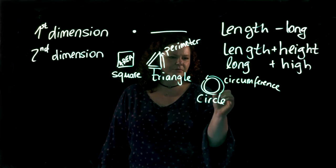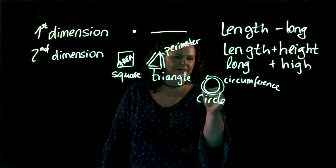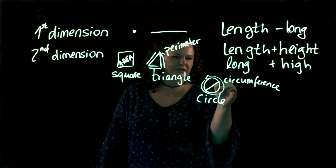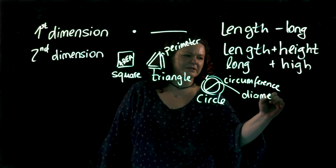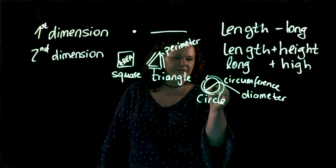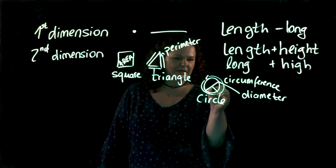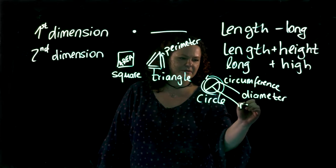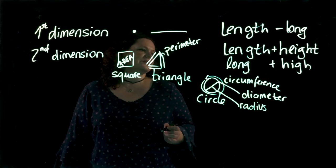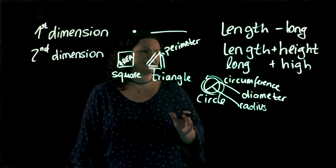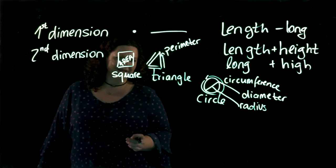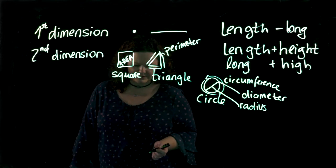We can also look at two more things here in the circle and this is first of all from one point here to the point here which gives us the diameter of the circle and last but not least we could also just go from here to here which gives us the radius of the circle. So the circle is a very special shape in the second dimension which gives us the circumference, the diameter and the radius plus of course the area of a circle.